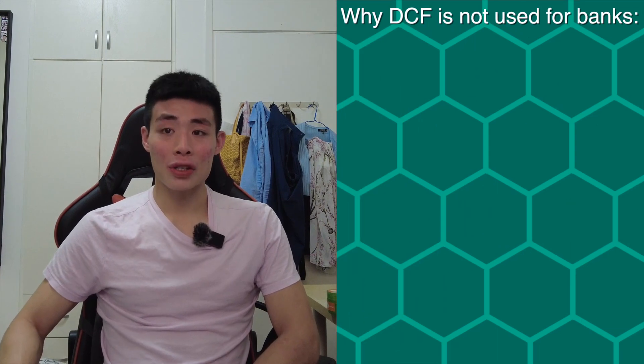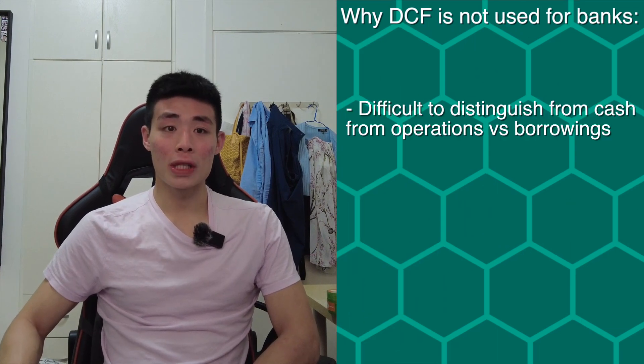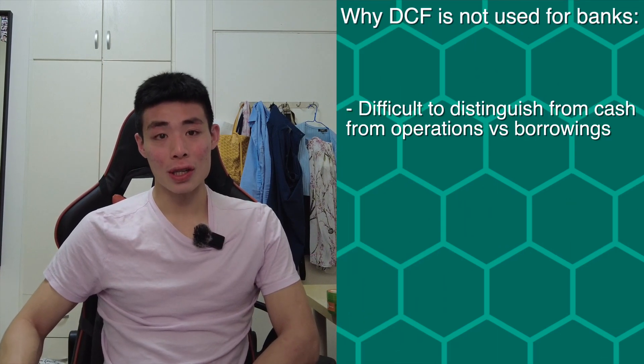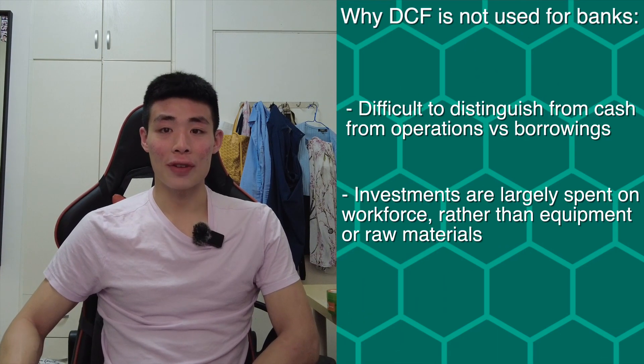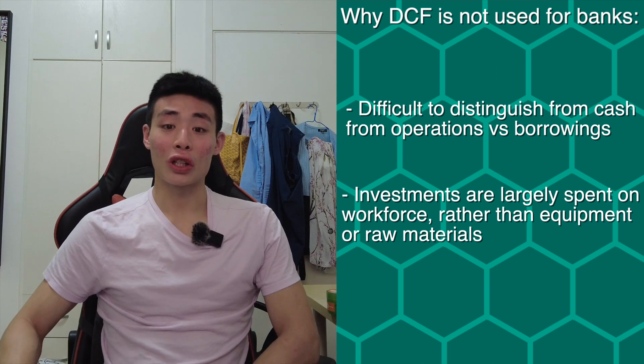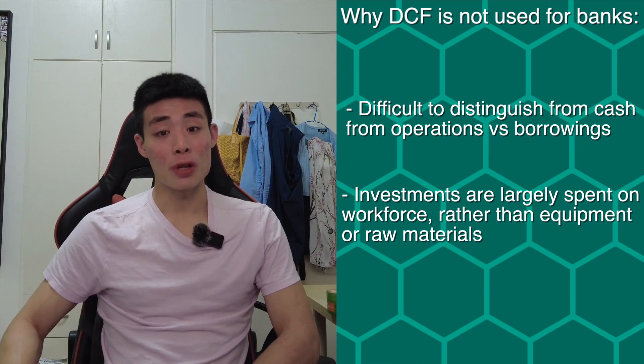With financial institutions like Citigroup, using the DCF method is unreliable. This is because in banks, most of the raw material is cash itself, and most of the investments it makes are in its workforce rather than in physical machinery. Not only is it impossible to acquire numbers for these metrics, but they would also be extremely subjective.